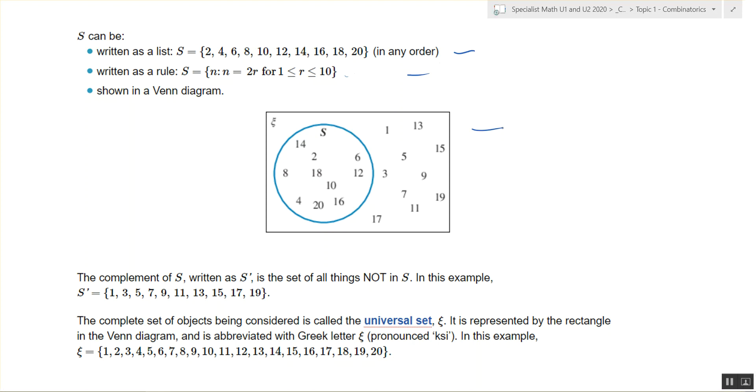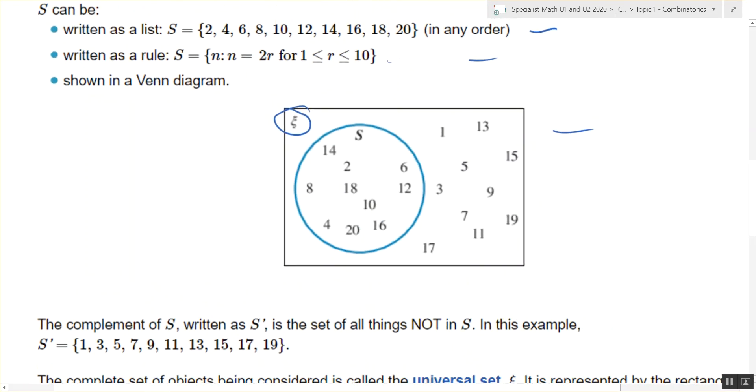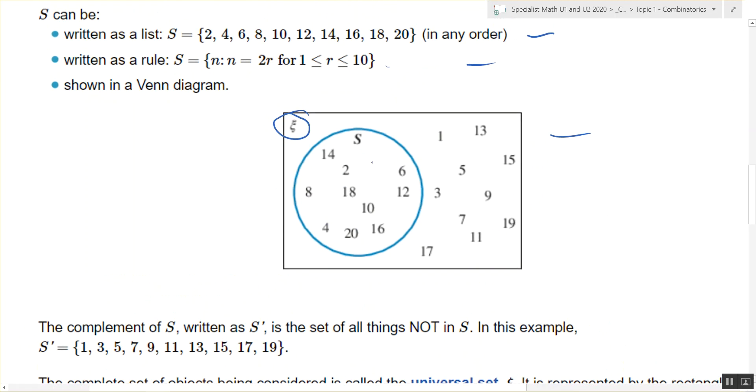So we have the universal set, the weird E, and inside the S set is all of the even numbers between 2 and 20.